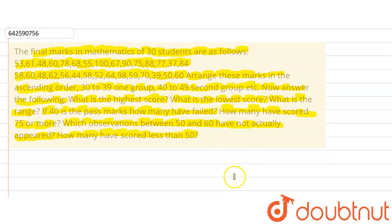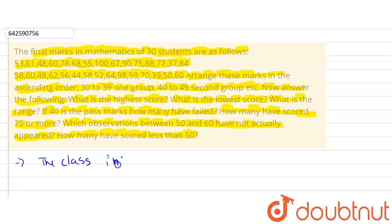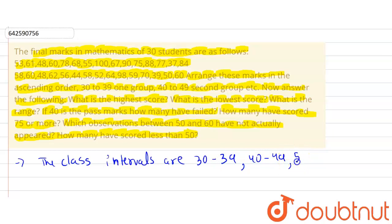So basically in this question we are given the final marks of 30 students in maths, and we have to arrange these marks in ascending order according to the given groups and answer the following questions. First, let's arrange this raw data into ascending order. The class intervals are 30 to 39, then 40 to 49, then 50 to 59, and so on.